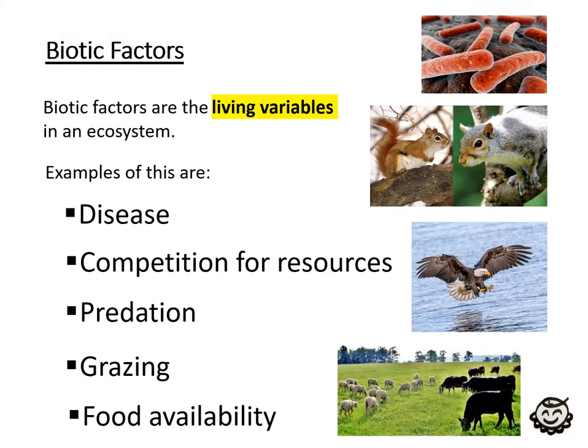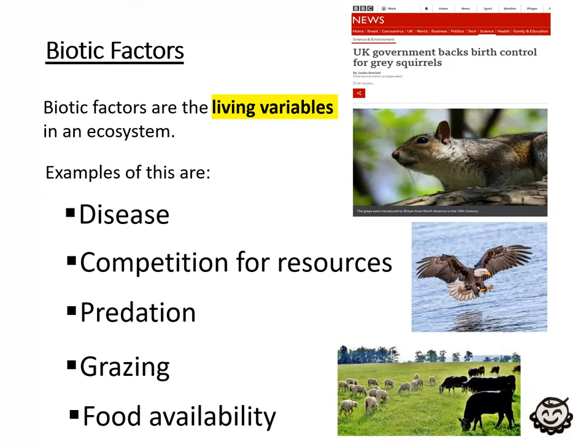Going back to these squirrels — I saw an article the other day talking about the UK government carrying out birth control for grey squirrels, using oral contraceptives to control these grey squirrel populations because of the damage they and other invasive species are causing. It's interesting to know that invasive species in UK woodlands cost the UK 1.8 billion pounds a year. So that's quite a lot of money.